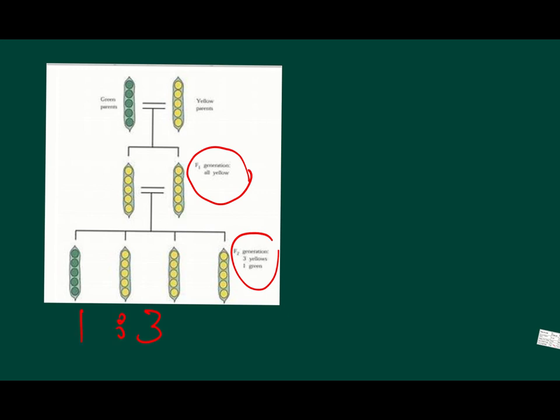Mendel has done some conclusions based on his experiments, but we are going to come across these conclusions later on. He put two laws. The first law, we call it law of segregation, and the second law, we call it law of independent assortment. Now we are going to watch a short video about Mendel's history and his experiments, and then we'll complete our discussion about the first and second law of Mendel.